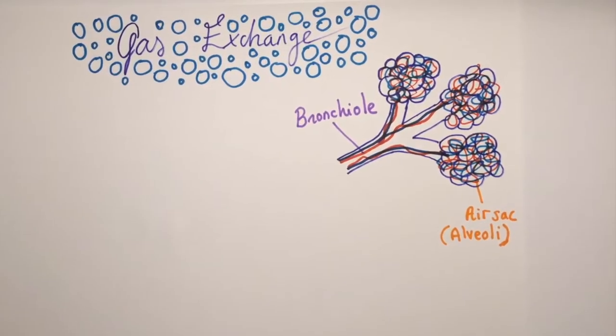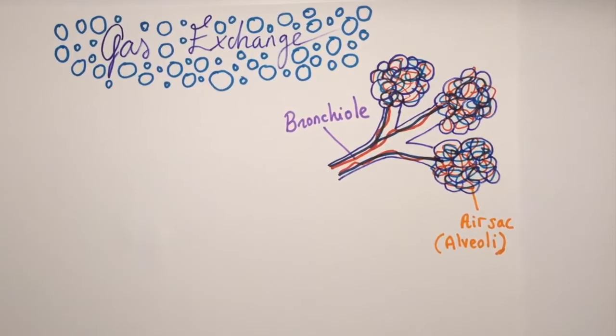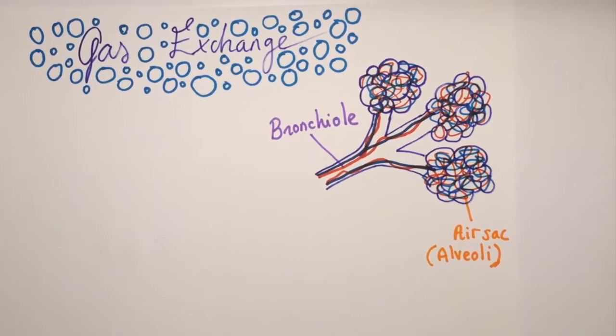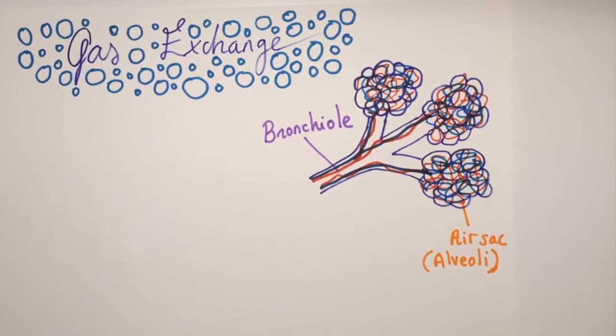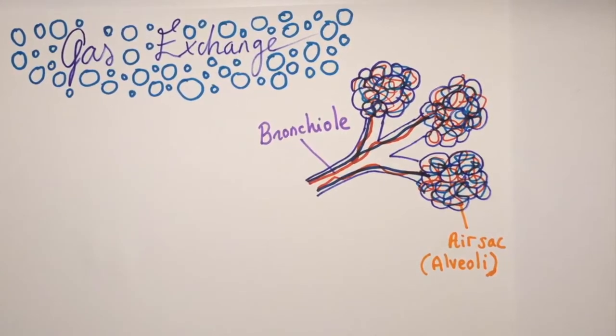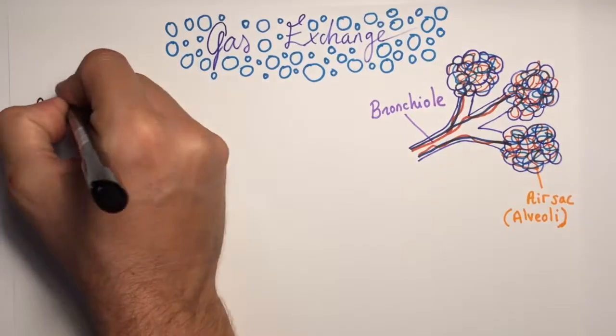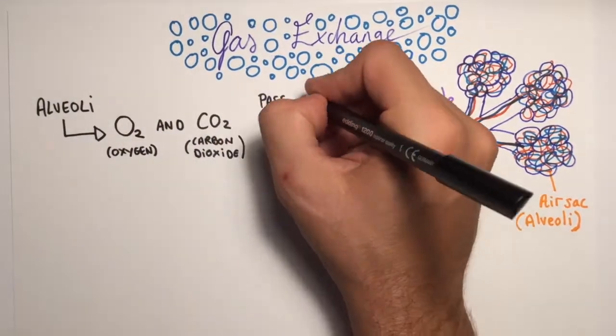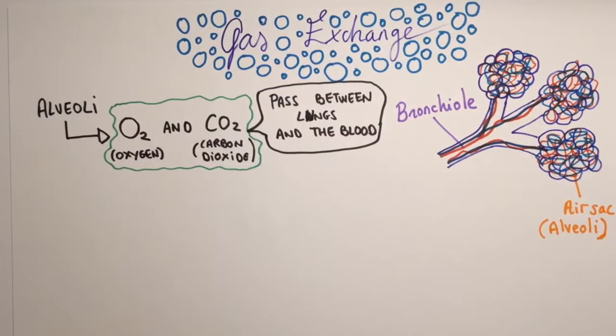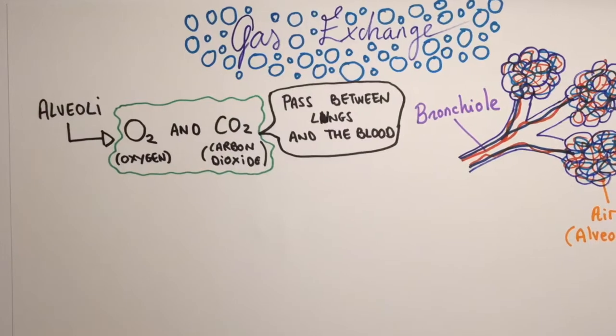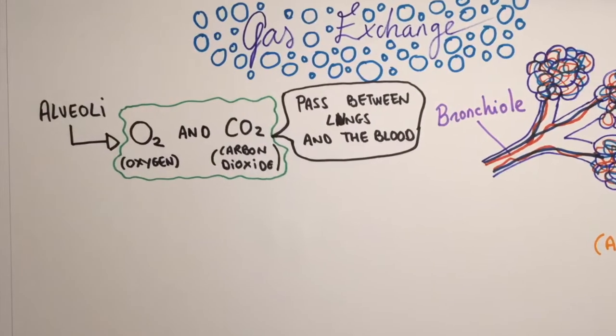The alveoli in the lungs are surrounded by tiny blood vessels, but the air sacs and the blood vessels have very thin walls. These walls allow oxygen and carbon dioxide to pass between the lungs and the blood.